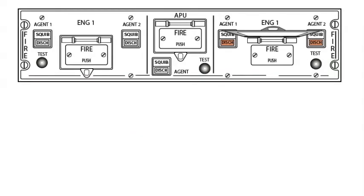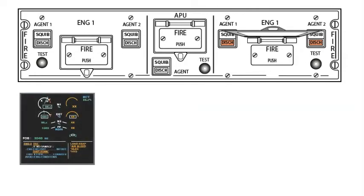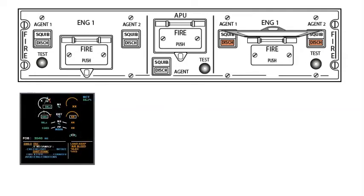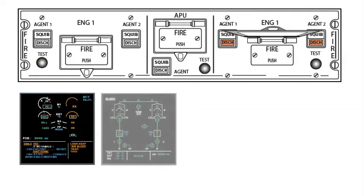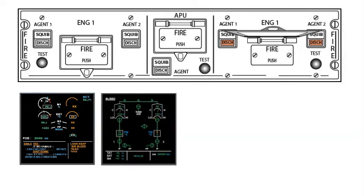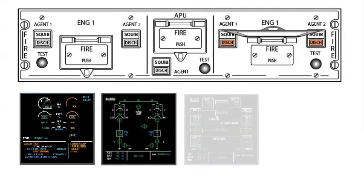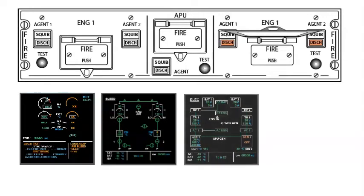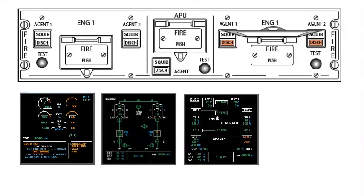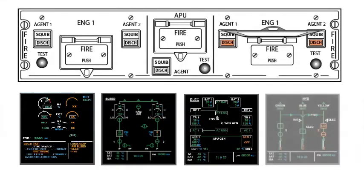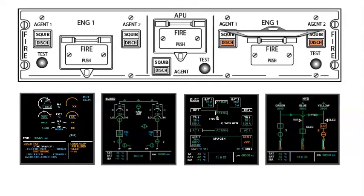The ECAM clears the previous actions and asks for a fire extinguisher selection after finishing the 10-second countdown indicated on the screen. After discharging the extinguisher, all affected engine parameters disappear. ECAM replace them with amber crosses.